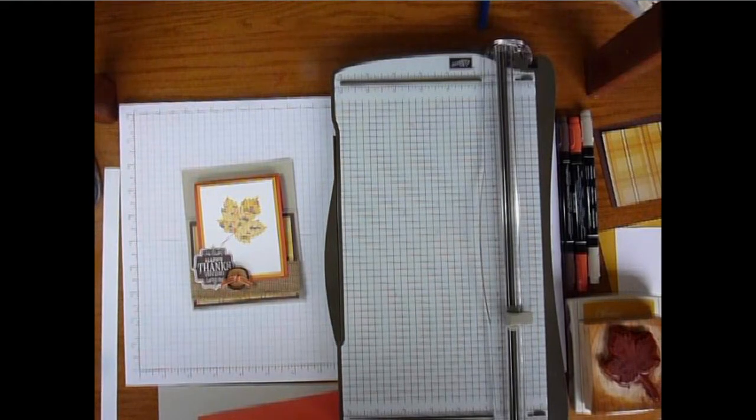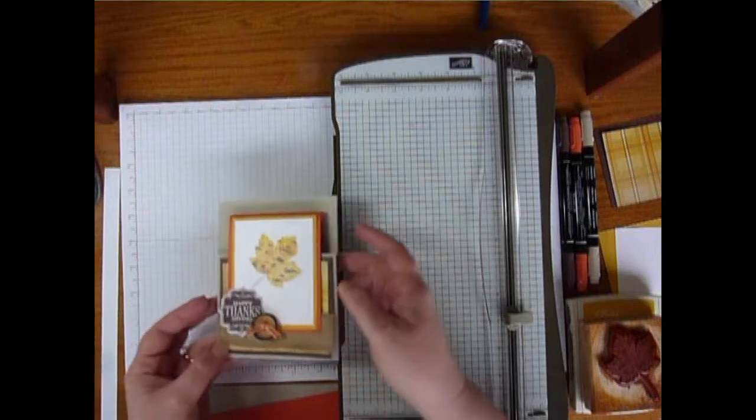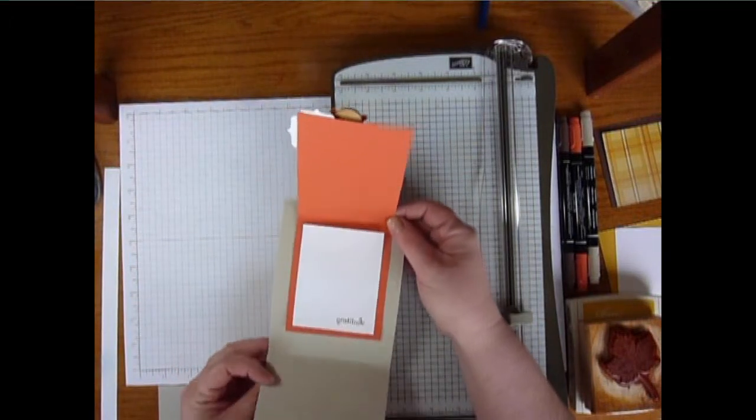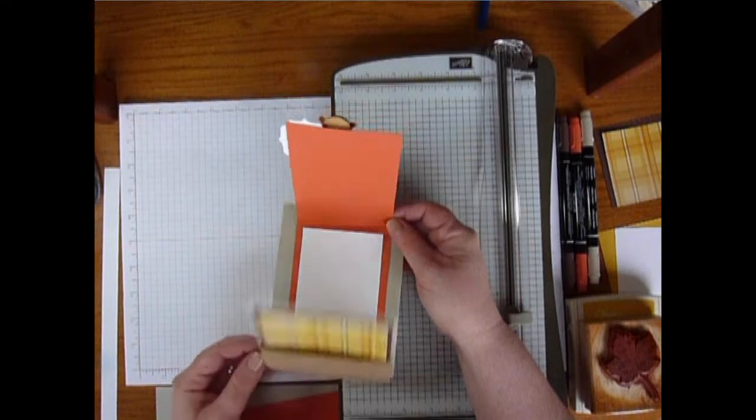This is Dara McKellen with DreamingAboutRubberStamps.com and today I want to show you how to make one of these cards. It's actually two cards in one, so we have a smaller card on top and when you open it up it's attached to a second larger card.